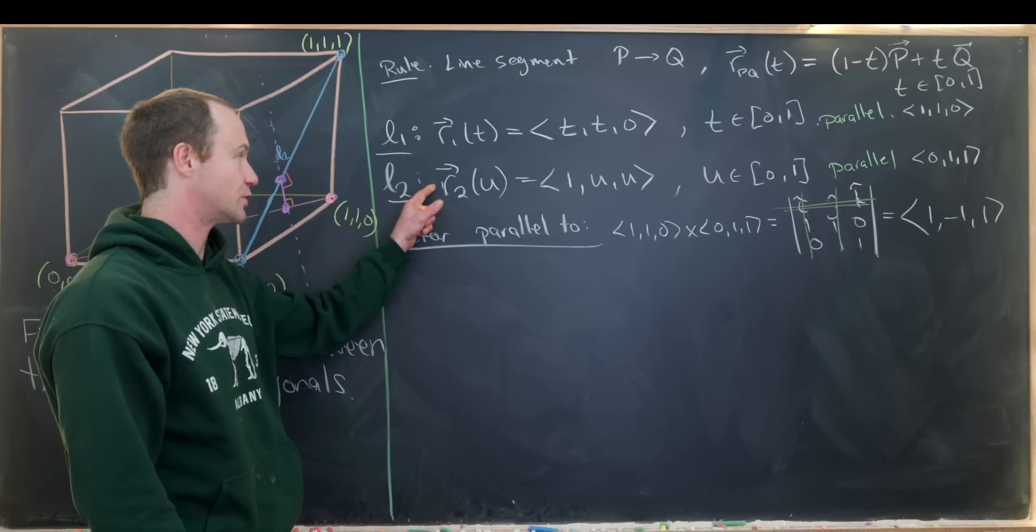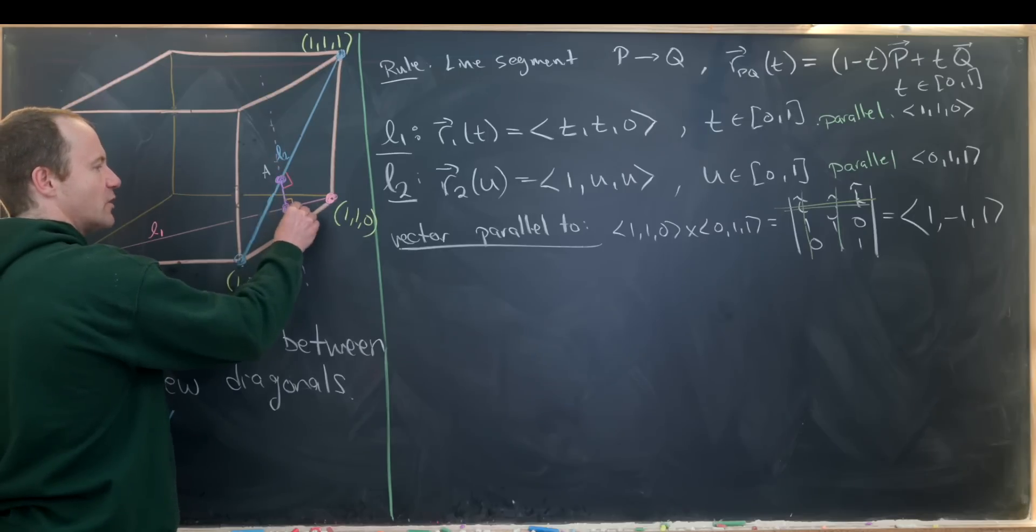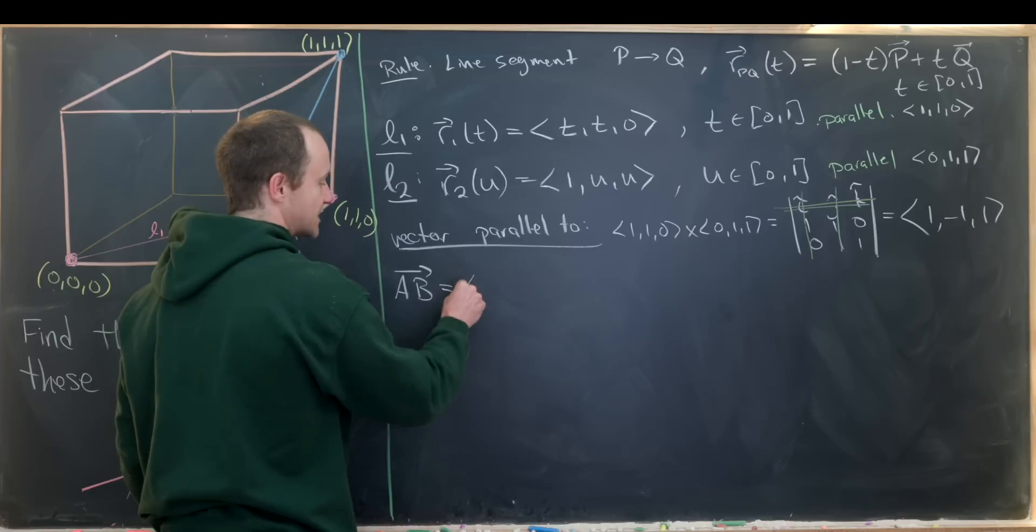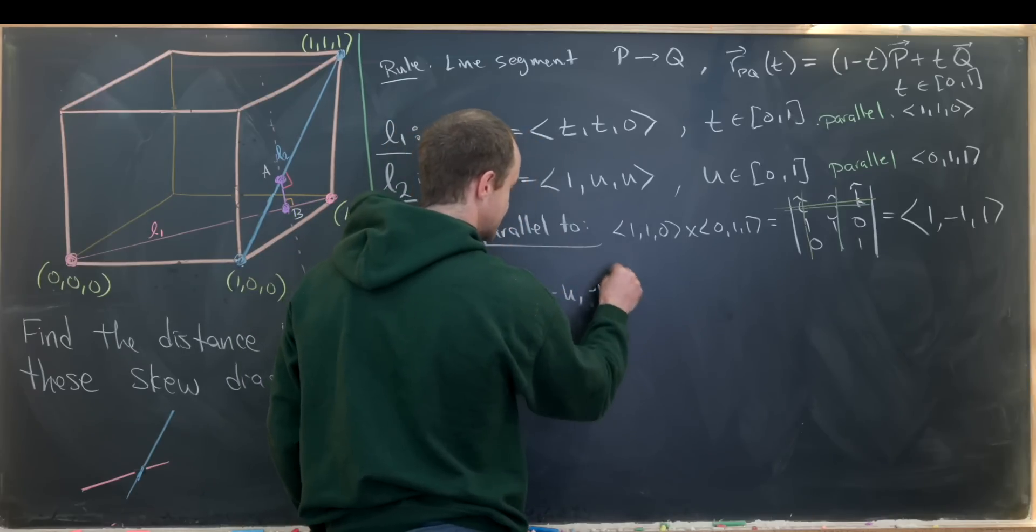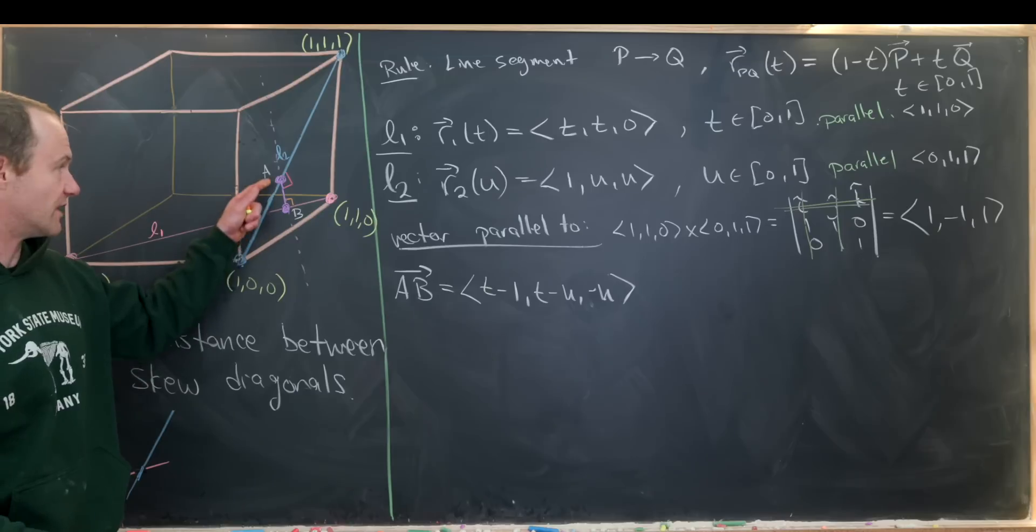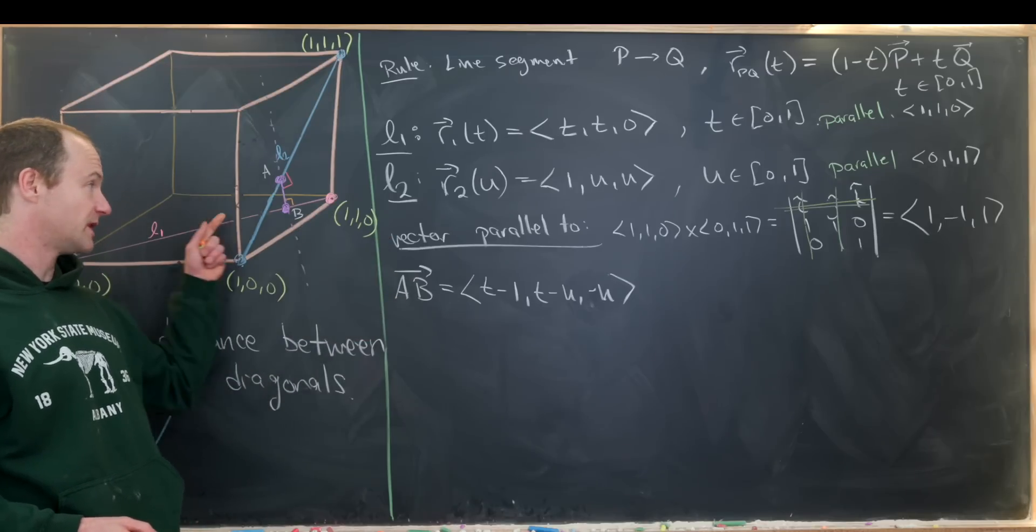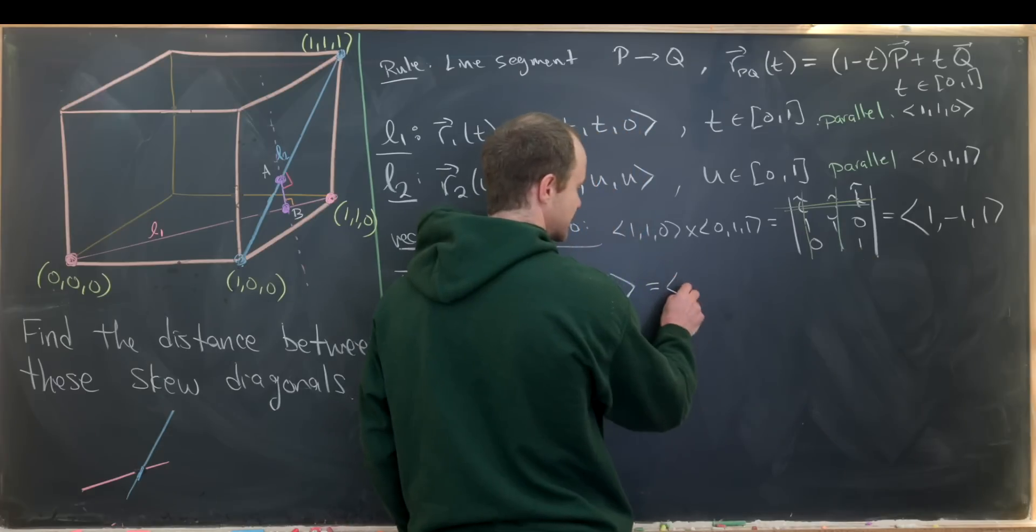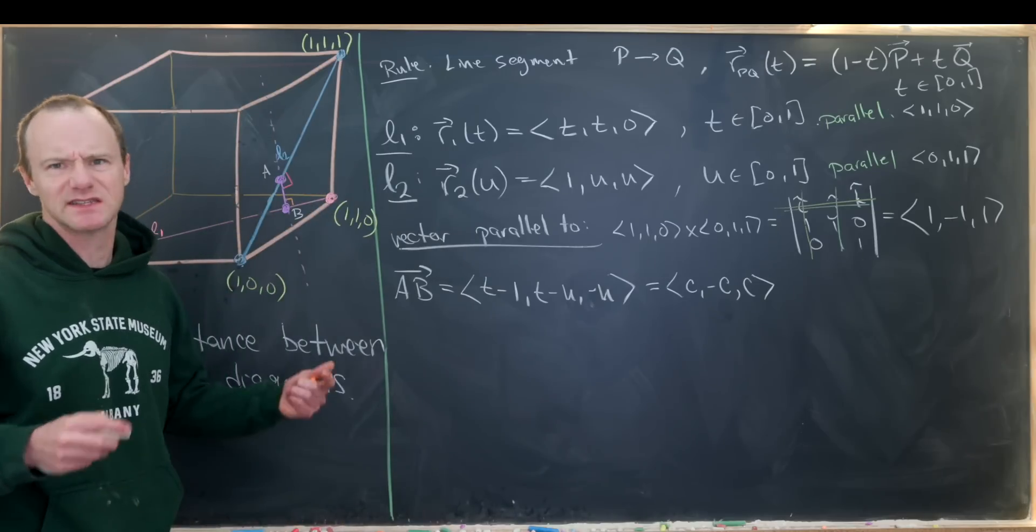So next up, we want to calculate a vector between two points on this curve. So let's maybe call this point up here, maybe we'll call it a, and this point down here, b. So the vector between a and b will be given by the difference between these two vectors. So that'll be t minus one, t minus u, and then minus u. So that's the vector between these two line segments. Or I guess the vector in the direction of the line segment between these two diagonals. And in order to minimize this, this vector has to be perpendicular to each of the diagonals. In other words, parallel to this vector. So we want it to be parallel to this vector. So it should be a scalar multiple of this vector. So it should be of the form c minus c, c. So that's a scalar multiple of that vector.